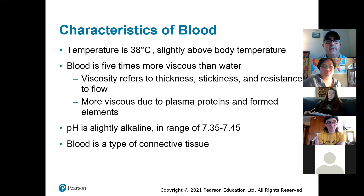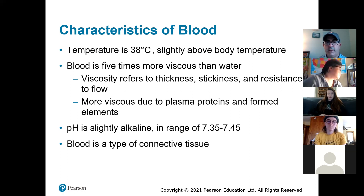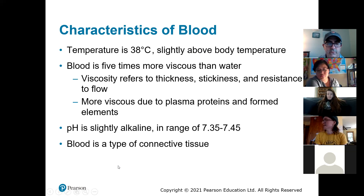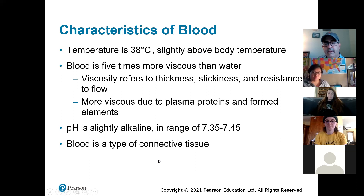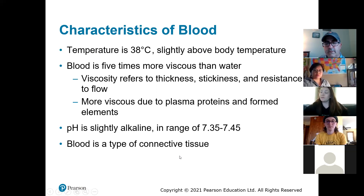Characteristics of blood: the temperature is 38 degrees Celsius, slightly above body temperature — we think of body temperature as 37 degrees Celsius, so blood is a little bit warmer. It is five times more viscous than water — it's thick, not runny like water. It's slightly alkaline, 7.35 to 7.45. And blood is a connective tissue — if you think back to the four tissue types: epithelial, connective, muscle, and nervous. It's a connective tissue, and it's the only one that's liquid.